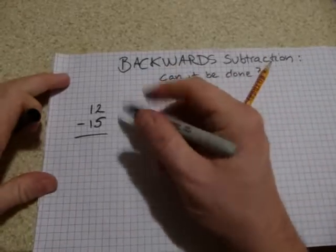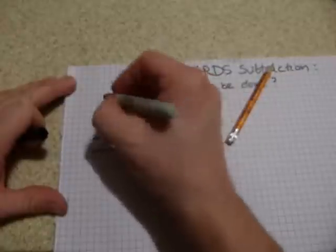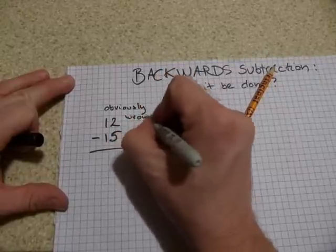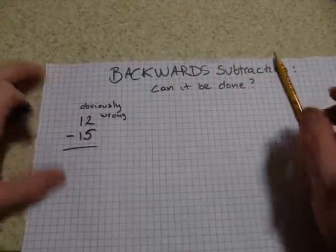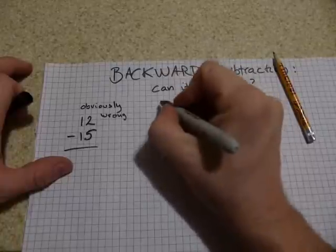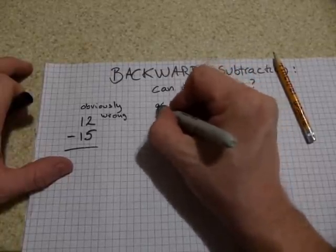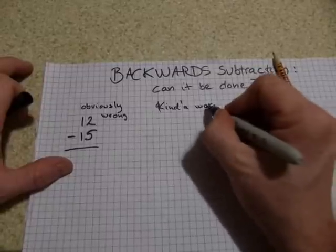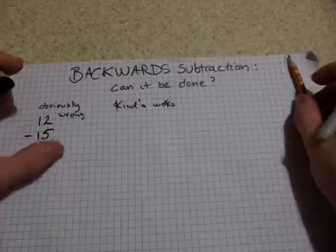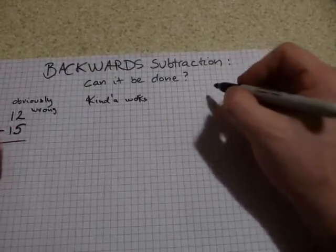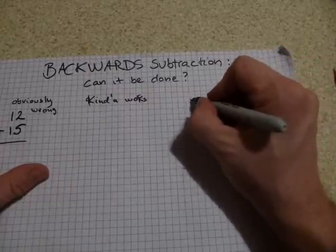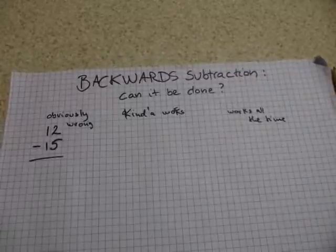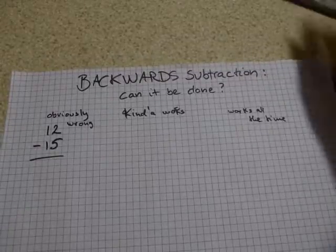This version I'm going to call 'obviously wrong.' This one is going to be called 'kind of works.' And here will be a version which 'works all the time.' So we're going to go from obviously wrong, to kind of works, to works all the time.